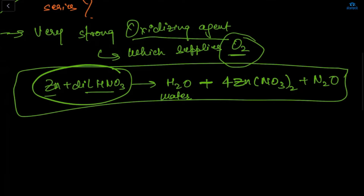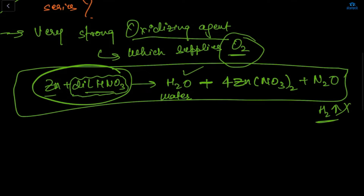So if any metal reacts with HNO₃, H₂ does not form — water forms instead, but not H₂. HNO₃ is a strong oxidizing agent, so H₂ is not produced; H₂O is produced.